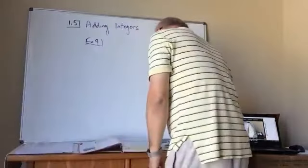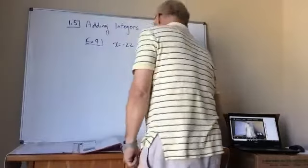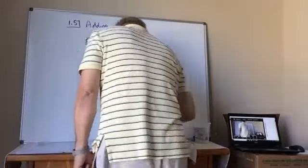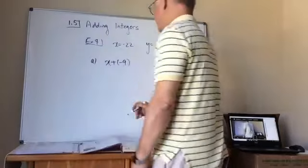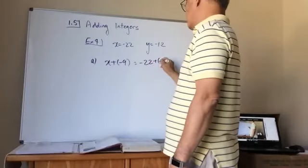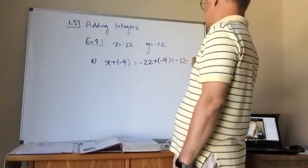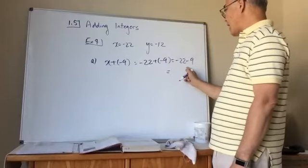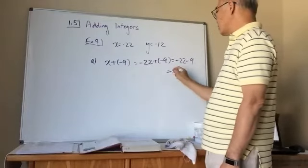Example 4: Evaluate the expression when x equals negative 22 and y equals negative 12. Part a: x plus negative 9. Substituting: negative 22 plus negative 9, which is negative 22 minus 9. Same signs, so add: 22 plus 9 is 31, common sign is negative — answer is negative 31.